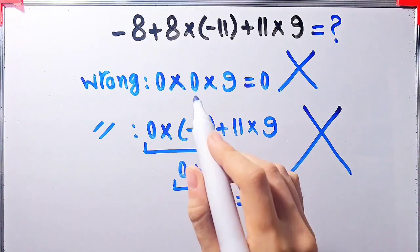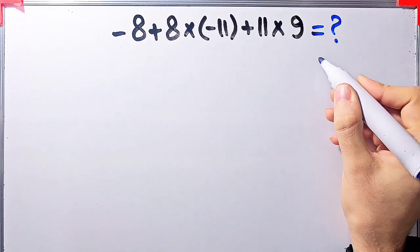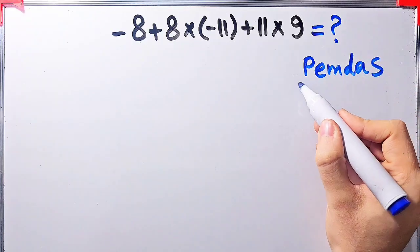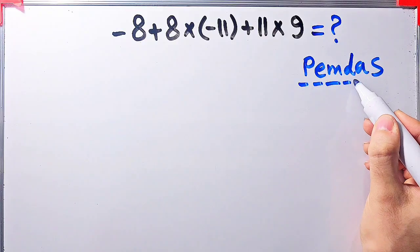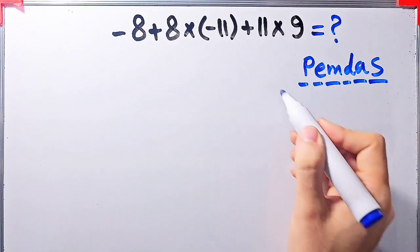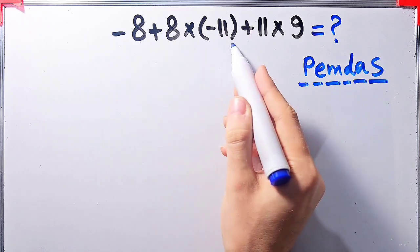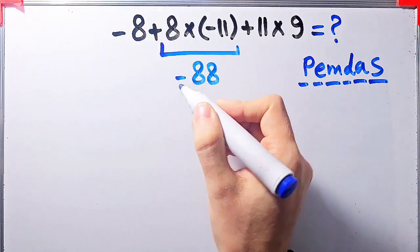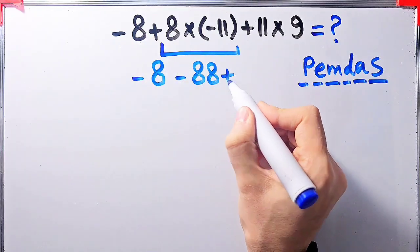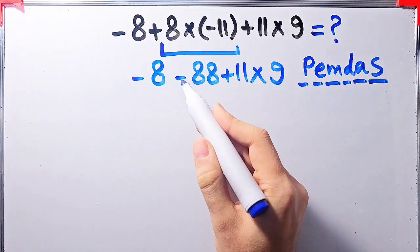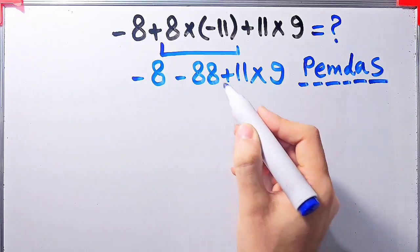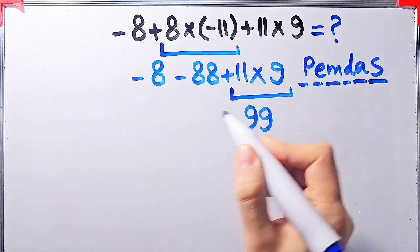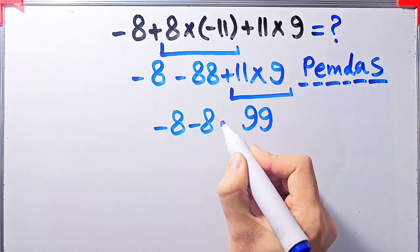Let's solve this step by step. We need to follow the PEMDAS rule: parentheses, exponent, multiplication, division, addition, and subtraction. According to PEMDAS, first we simplify the multiplication: 8 times negative 11 equals negative 88. Now the question is negative 8 minus 88 plus 11 times 9. Now we have subtraction, addition, and multiplication. First we simplify the multiplication: 11 times 9 equals 99.